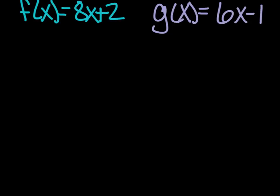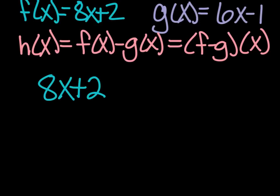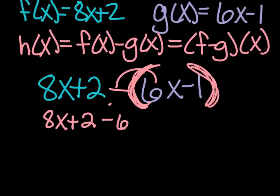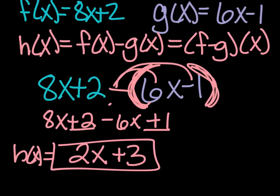Same f and g. Let's find h of x equals f of x minus g of x, which could also be written as f minus g of x. Either way, I'm just taking the f function, 8x plus 2, and I am subtracting the g function, 6x minus 1. Now subtraction is a little harder because you have to subtract the whole function. See these parentheses? You've got to have them. I'm not just subtracting 6x and then minus 1. So we've got 8x plus 2, and then we have minus 6x, and we have minus minus 1, which becomes plus 1. So 8x minus 6x is 2x, and plus 2 plus 1 is plus 3. So h of x equals 2x plus 3.